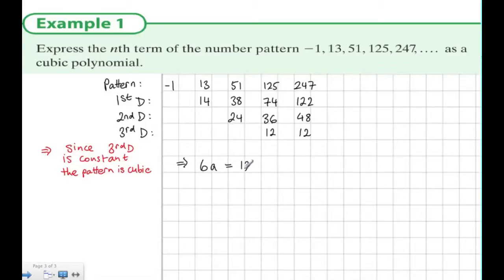So 6a is the third difference, which is 12, so it follows a must be 2. For cubic patterns, it follows that an³ + bn² + cn + d is a cubic pattern.